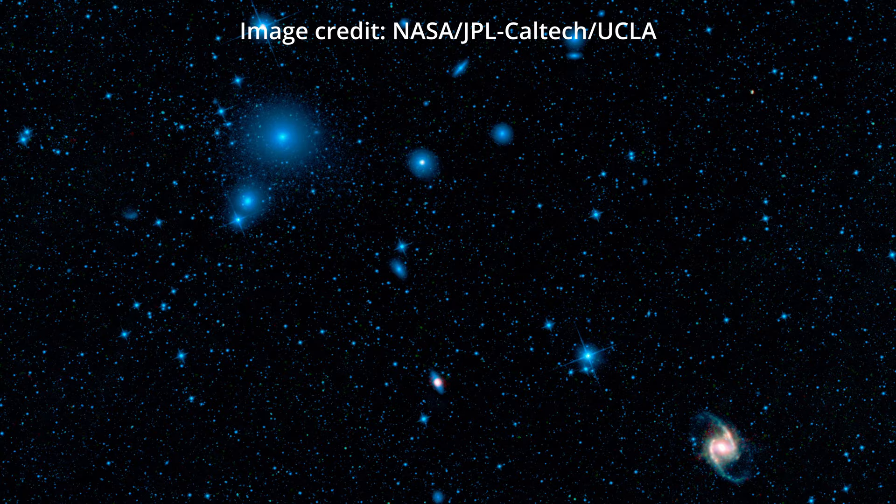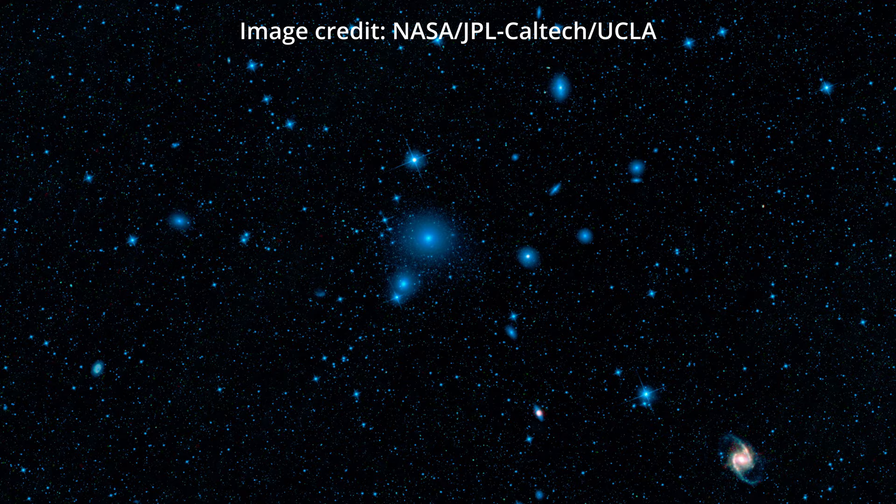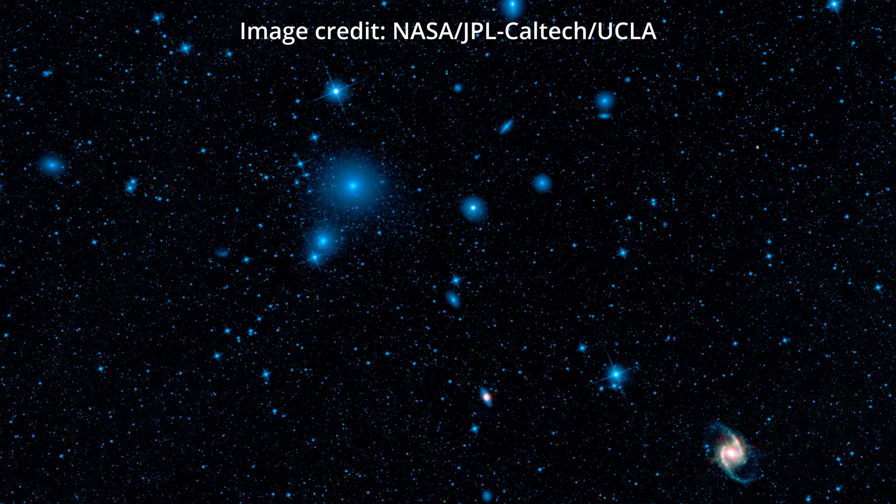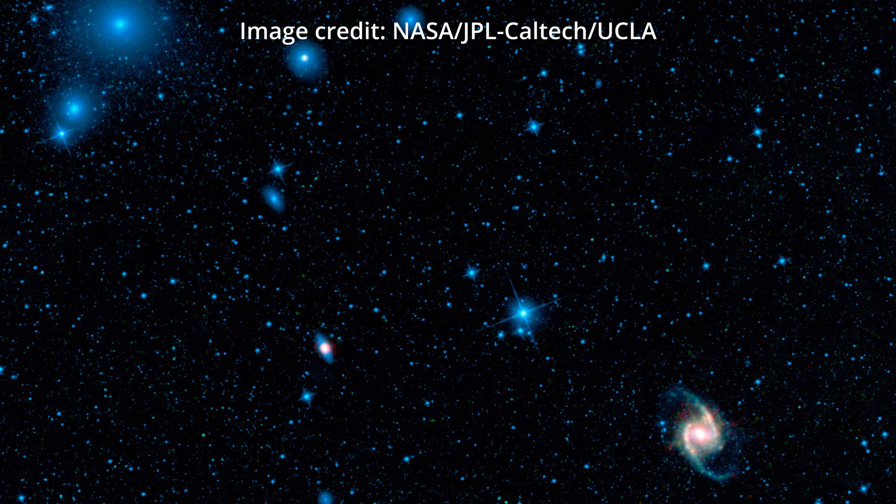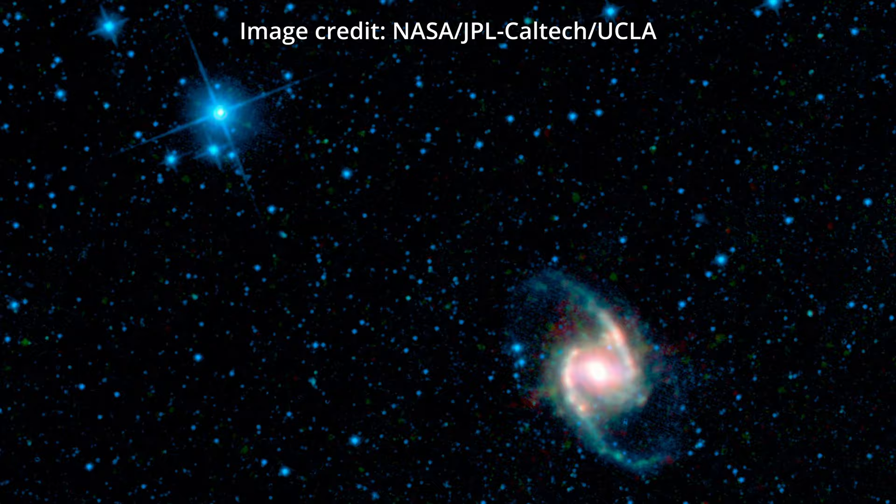It's a dominant member of the well-studied Fornax galaxy cluster. The barred spiral galaxy designation means it is a spiral galaxy but with a bar in the center, and that bar is a sign of the maturity of a galaxy.